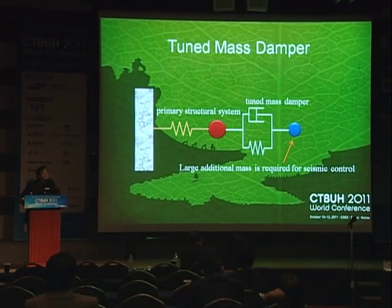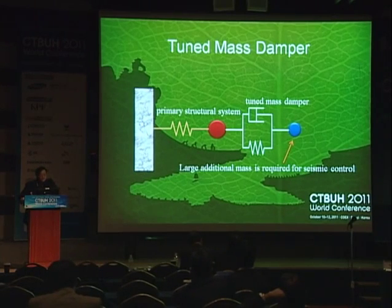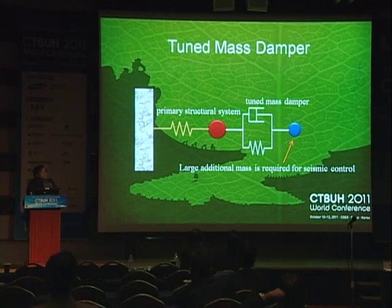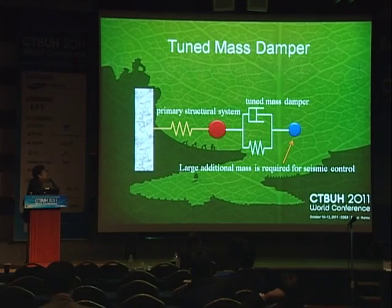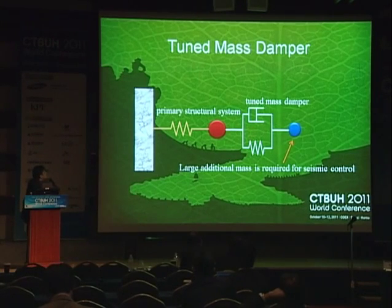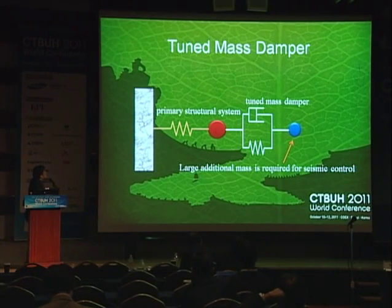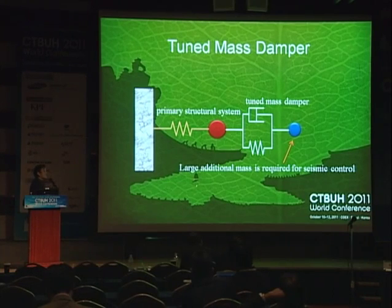Here I'd like to show you a quick review on the tuned viscous mass damper. The basic concept of the tuned viscous mass damper is the same as a conventional tuned mass damper. In a tuned mass damper system, the tuned mass damper is connected in series to the primary system, and the dashpot and the spring are in parallel. A large additional mass — several percent of the primary mass — is required for seismic control, so tuned mass dampers are not usually used for seismic control.